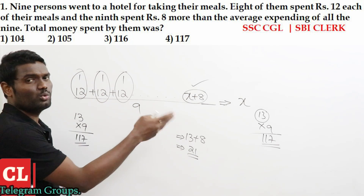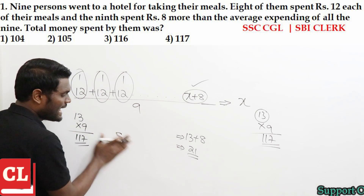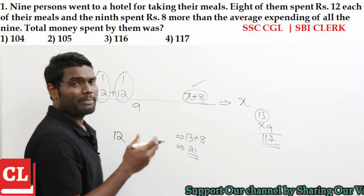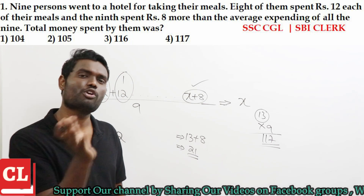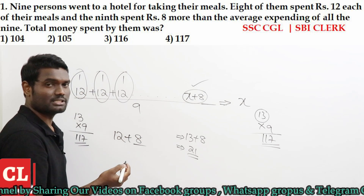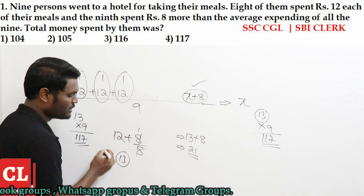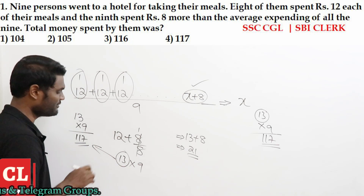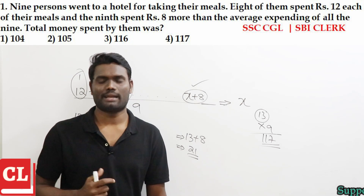If you want to do this directly: 8 persons spent ₹12 each. The 9th person spent 8 more. This 8 extra is distributed for all the remaining 8 persons — 8 divided by 8 is 1. So average is 12 plus 1 equals 13. Multiply by 9 persons: 13 × 9 = 117 rupees.